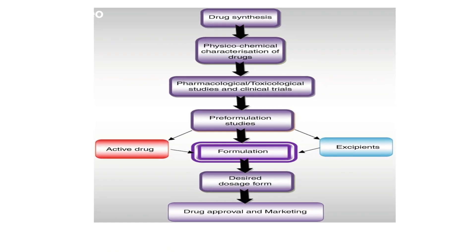Looking at this simple flowchart: once a new molecule is derived, the basic physical and chemical characterization of the drug is done. The next step is to carry out toxicological studies — determining how toxic the dose is and what the therapeutic window is. Once pre-formulation is done, we go for the actual formulation studies, simultaneously studying compatibility with various excipients so that formulation becomes easy. The resulting desired dosage form then goes further for drug approval and marketing.